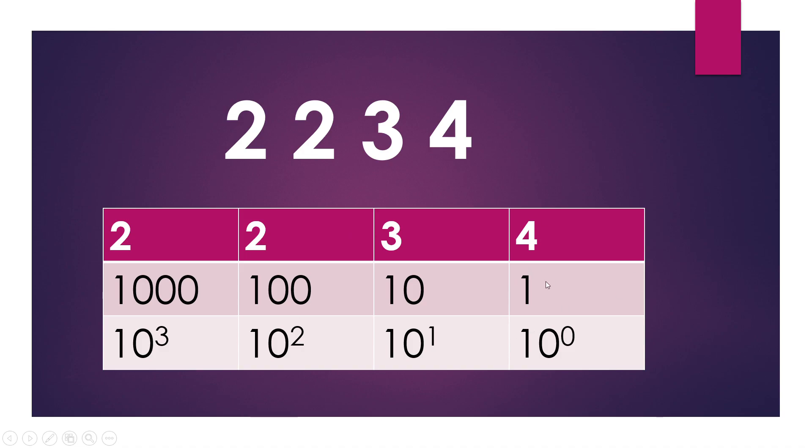So if you calculate this, 10 raised to the power 0 equals 1, and 4 times 1 is 4. Then here comes 10, and 3 times 10 is 30. So the position value of this 3 is 30. This 2 is 2 times 100 which is 200. This is 2000. So this is the way you are already familiar with how you can count this 2234 number.